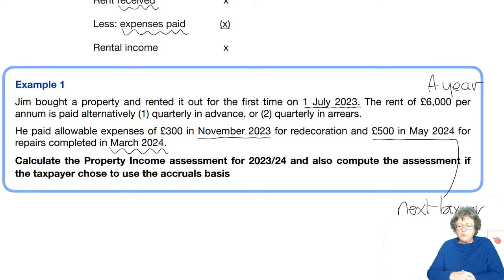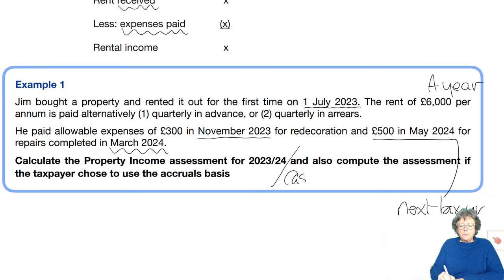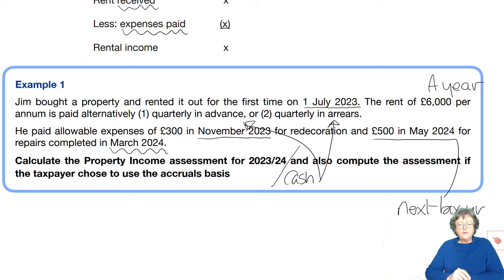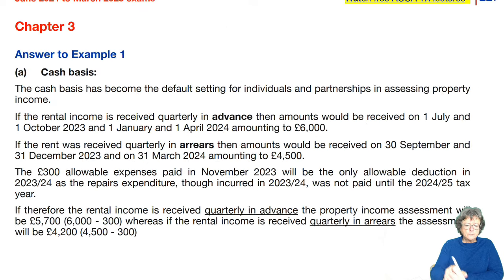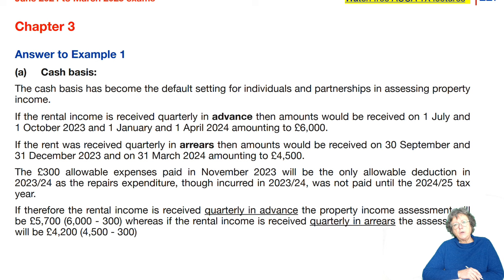We also need to compute the assessment on the accruals basis. So there are two situations: one is a cash basis — quarterly in arrears or quarterly in advance — and one is an accruals basis. I'm going to show you the model answer because it explains it just as well as I could. Cash basis has become the default setting, so most people will do that.